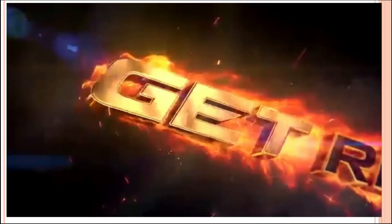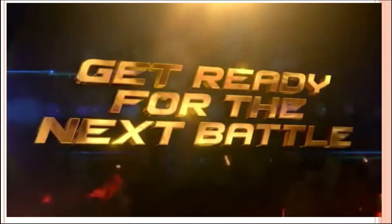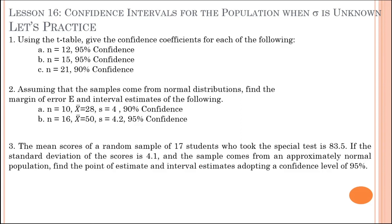Now let's practice. For the first part, use the t-table to find the confidence coefficient. For the second part, assuming samples come from a normal distribution, find the margin of error. For the third part — problem solving — the mean scores of a random sample of 17 students who took the special test is 83.5. If the standard deviation of the scores is 4.1 and the sample comes from an approximately normal population, find the point estimate and interval estimate adopting a confidence level of 95%. Please pause the video, solve, then check your answers.